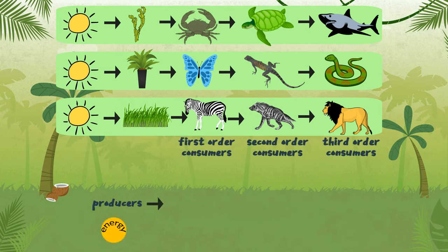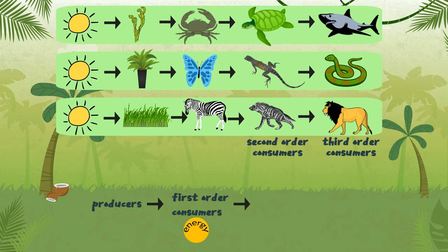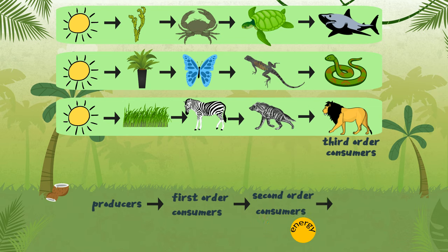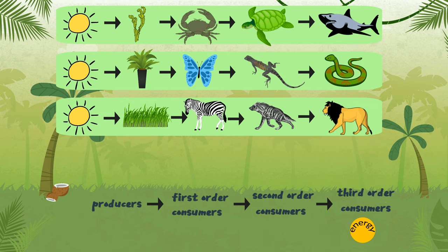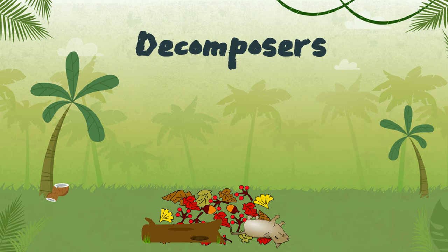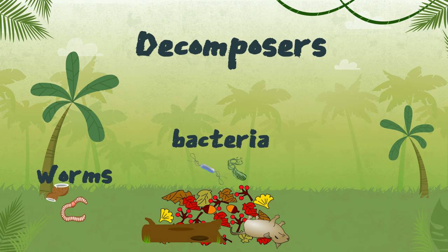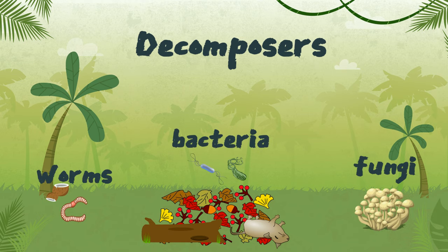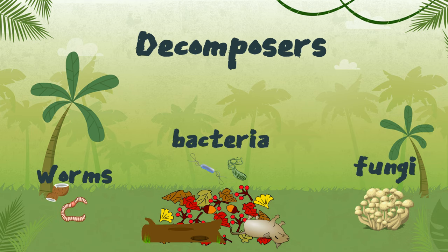Producers are eaten by first-order consumers, who are then eaten by second-order consumers, and in turn are eaten by third-order consumers. This isn't the end of the food chain. What happens when a living thing dies? Decomposers such as worms, bacteria, and fungi get their energy from dead plants and animals. The nutrients trapped in the dead organisms are released back into the soil, allowing plants to grow.